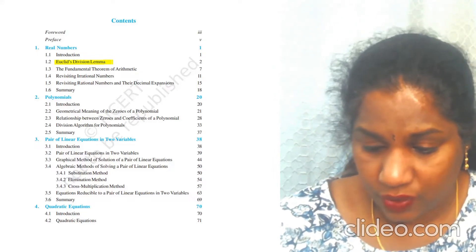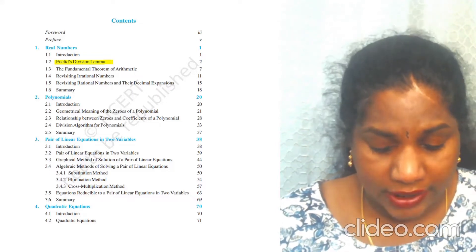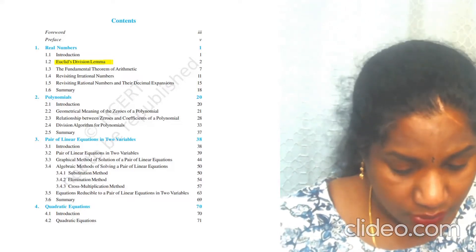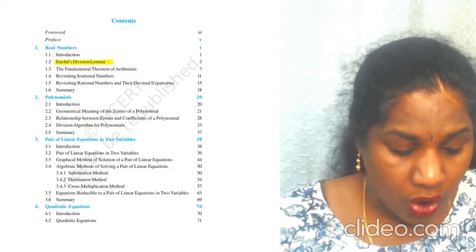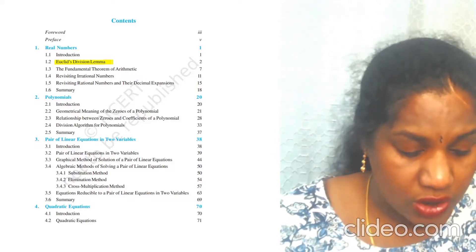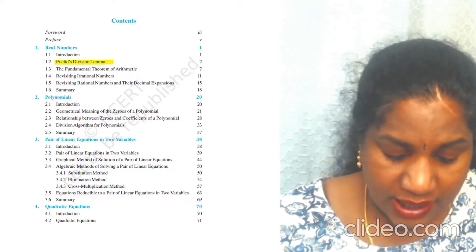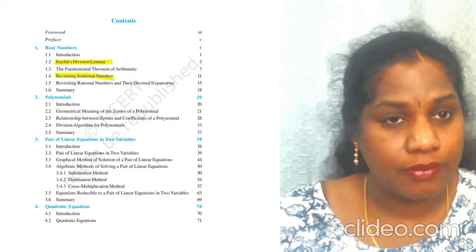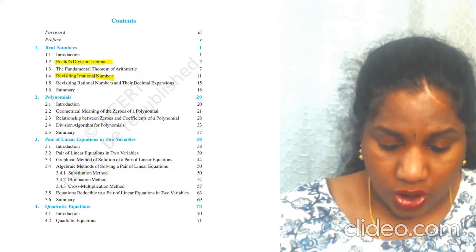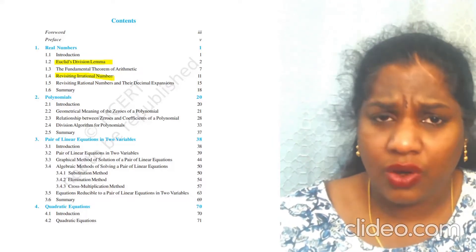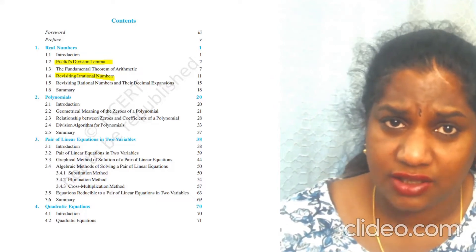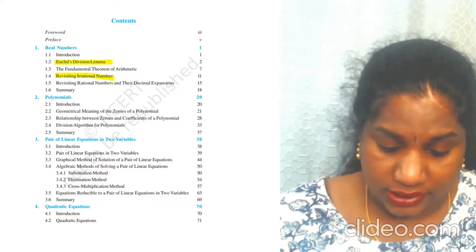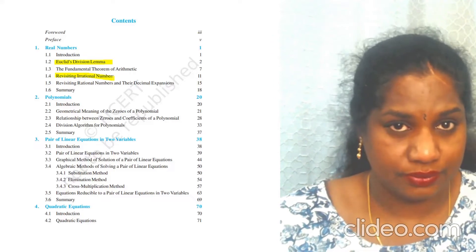Exercise 1.3 is completely removed — all related examples are removed too. That section covers revisiting irrational numbers, which you don't need to do. Note that since it's MCQ format, they won't ask you to prove that root 5 is irrational, so those topics are safely skipped. All other topics in Real Numbers you have to do.